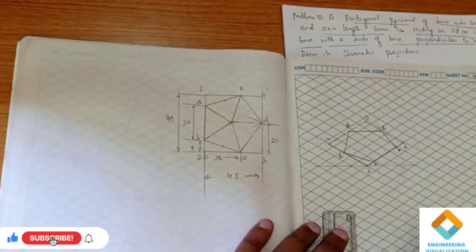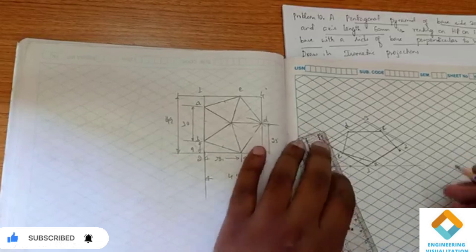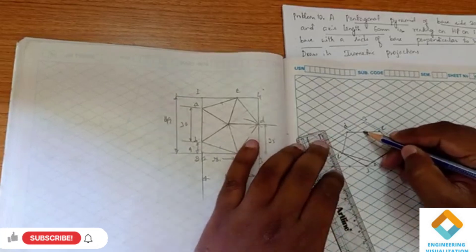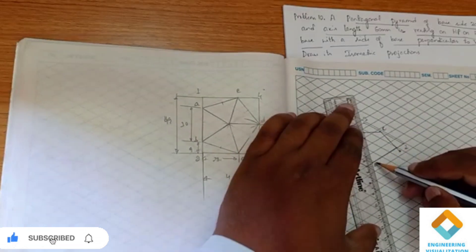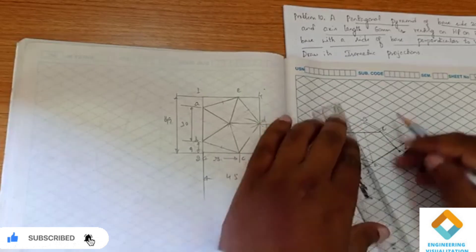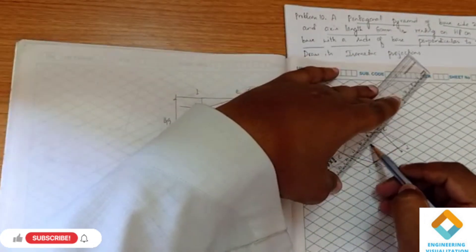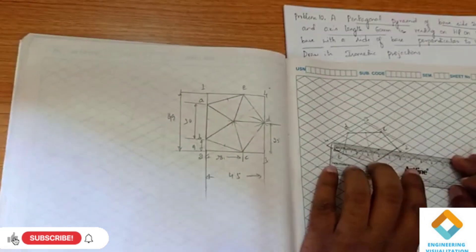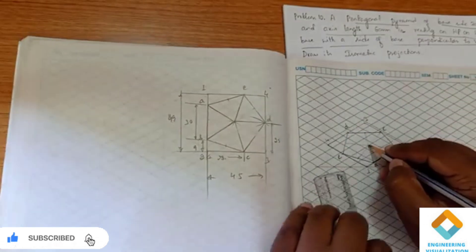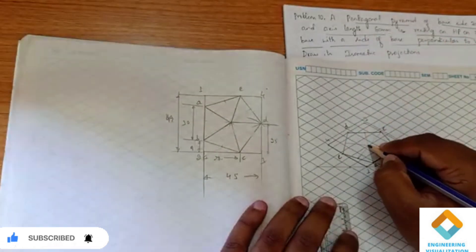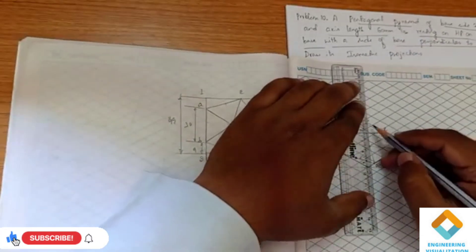This completes the pentagon. Now we have to find the center of this pentagon — I am going to draw three lines here to locate the center point. The axis length is 60mm, and from this center point we have to consider the axis vertically.